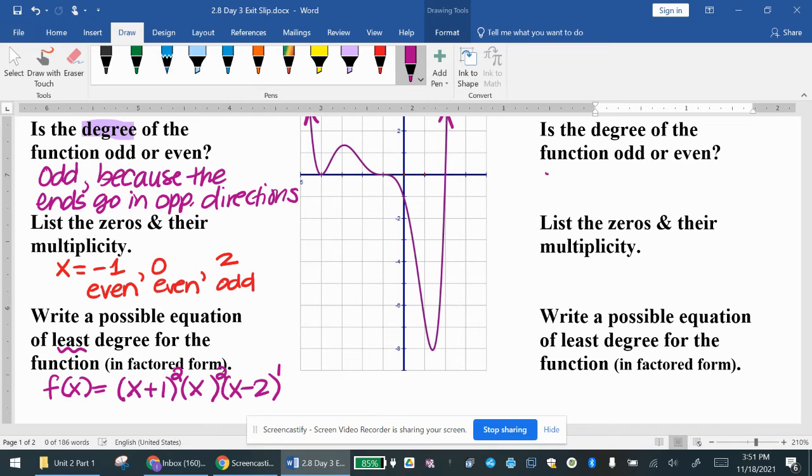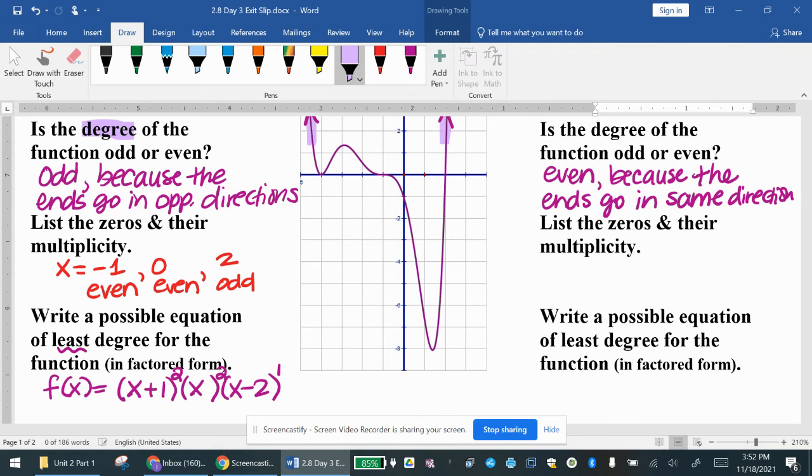So this next one is an even function. Sorry, my nose is really clogging up. It's an even function because the ends are going in the same direction. If you look at the arrows, they're both pointing up, up and up towards positive infinity.